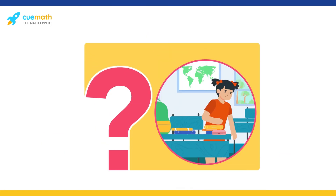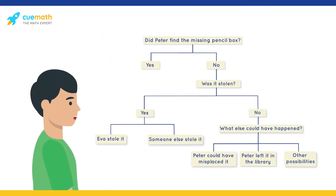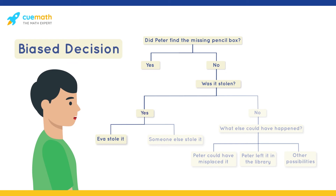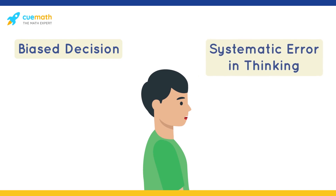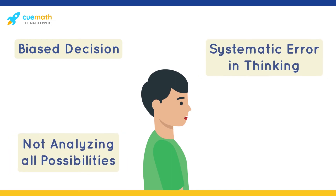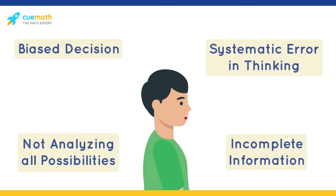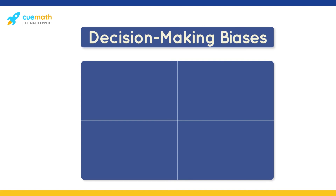Even if Eva did steal before, we cannot say without a doubt that she stole Peter's pencil box. We can say that Peter's thinking was biased because he did not consider other relevant information that could explain the cause of the missing pencil box. Decision-making bias is a systematic error in thinking that occurs when people analyze data selectively. There are many types of decision-making biases.